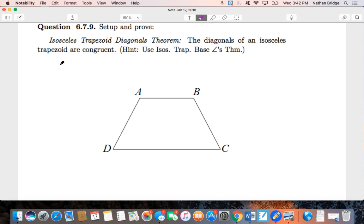And what we're talking about here is if the quadrilateral is an isosceles trapezoid.